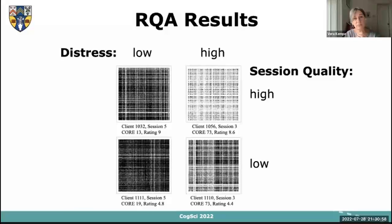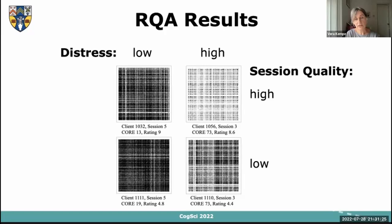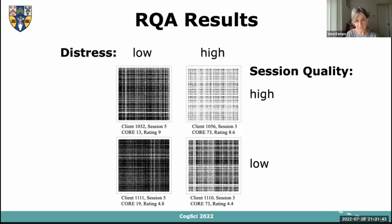The recurrence plots show that the left two plots are from sessions with low distress scores and the right two from sessions with high distress scores. Greater brightness in the right sessions indicates simply a smaller amount of talking, associated with higher distress. The top two sessions are ranked as higher quality and the bottom ones as lower quality. The qualitative patterns of recurrence differ considerably — raising the question of whether this variability is informative of session quality.